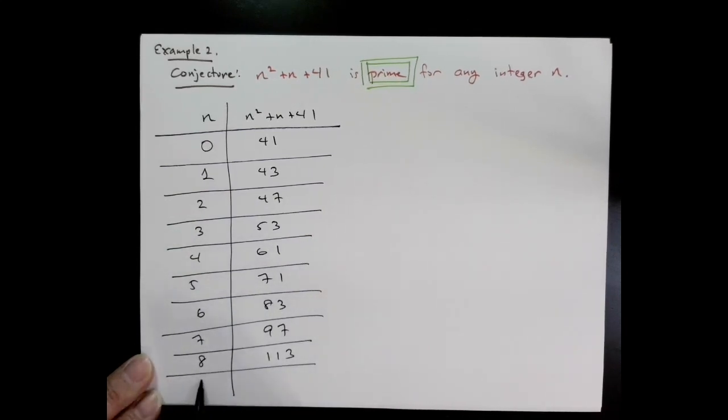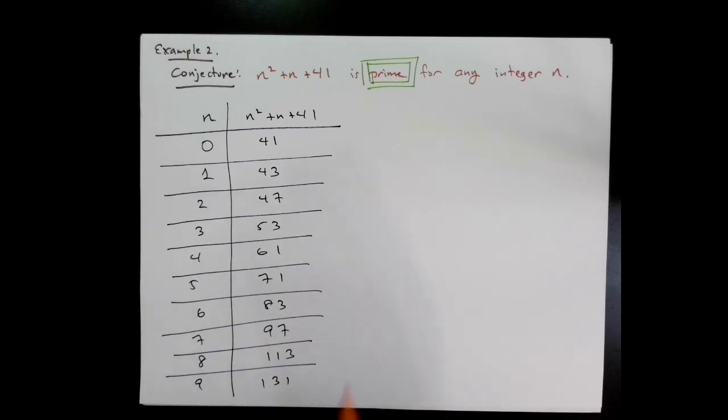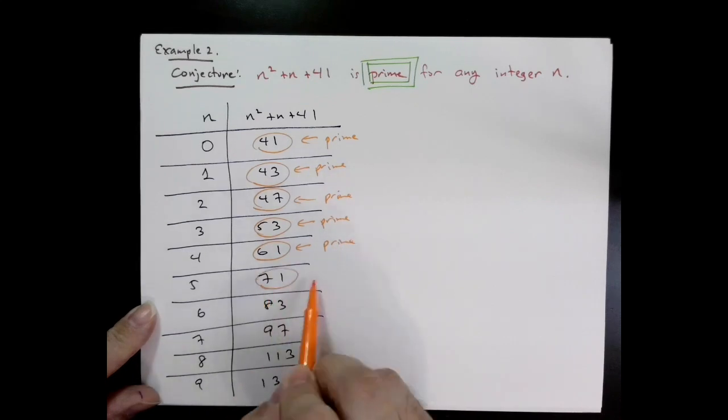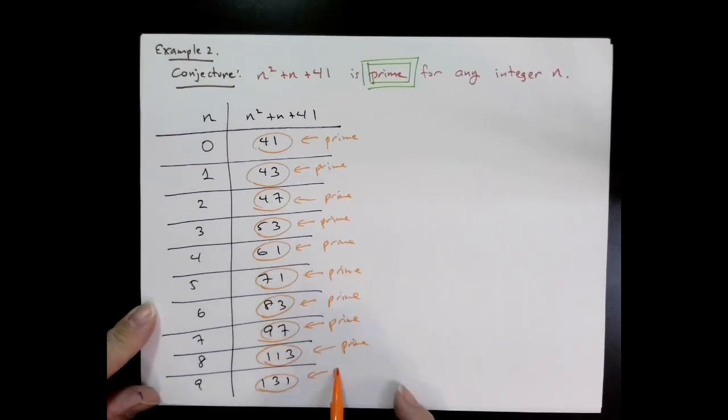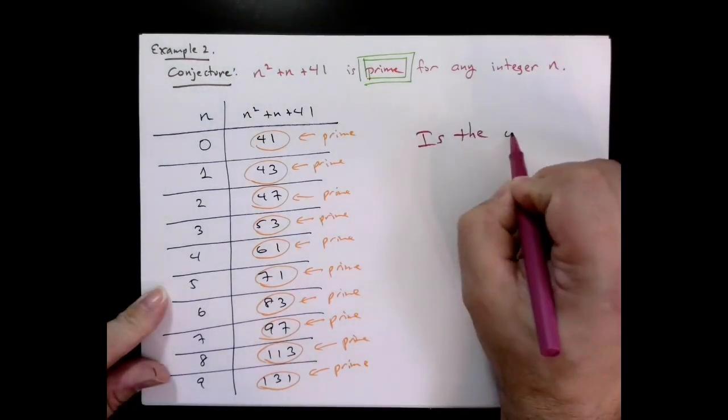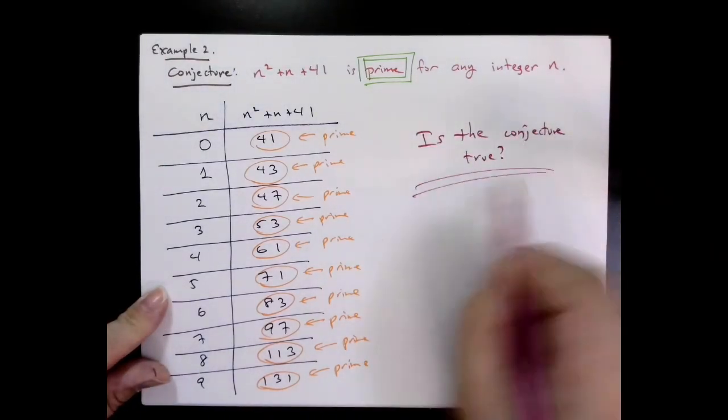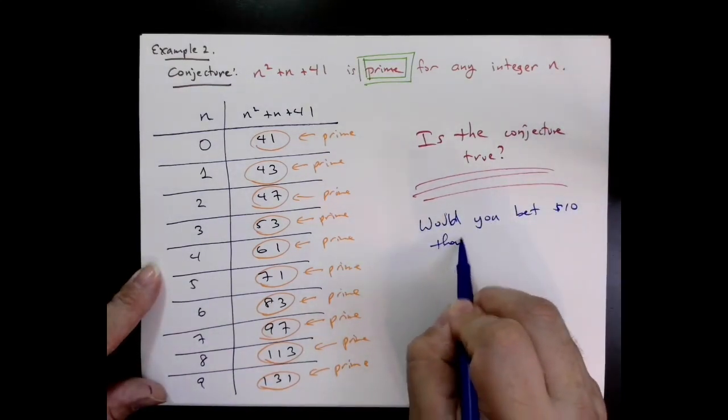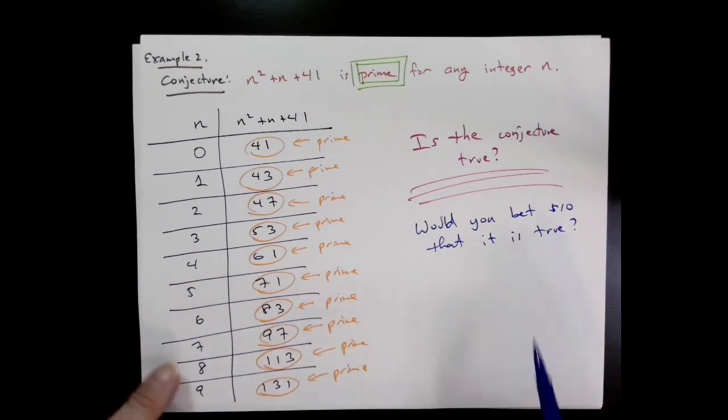All of these numbers are prime, so is the conjecture true? There's a lot of evidence that it is. But there's also a lack of evidence because we've only checked 10 numbers. There's more than 10 numbers, so it could certainly be false. Here's the real question: would you bet $10 that it's true? Think about it.